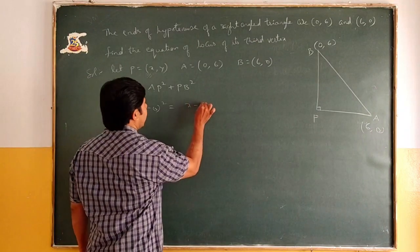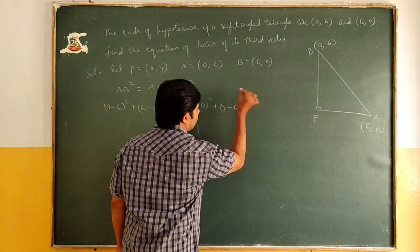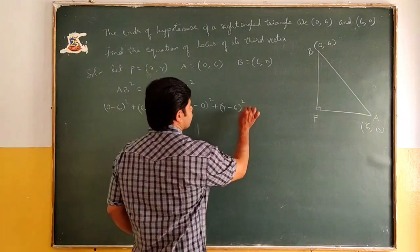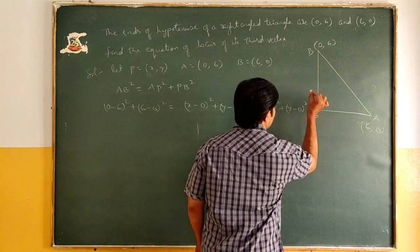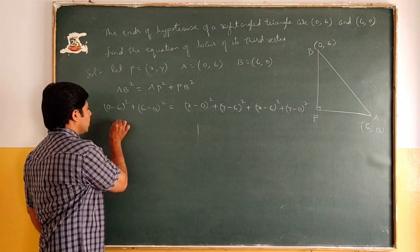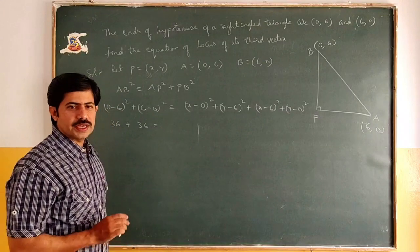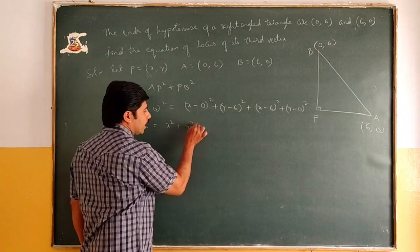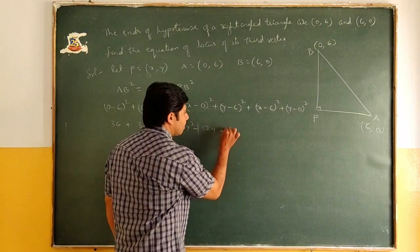AP² = x² + (y-6)². And PB² = (x-6)² + (y-0)². Now let's simplify. 36 + 36 = x² + (y-6)² + (x-6)² + y². Expanding: (y-6)² = y² - 12y + 36, and (x-6)² = x² - 12x + 36.